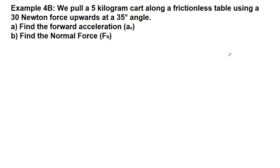The first thing that we do no matter what chapter we're in is we draw a picture of the problem as we read the setup. So we pull a five kilogram cart along a frictionless table, so no friction to worry about here. We'll see it soon but not in this problem. We use a 30 Newton force upwards at a 35 degree angle. Now we had a picture of this in the slides but that's what this would look like: 35 degrees up above the table and the pull force F pull is 30 Newtons.